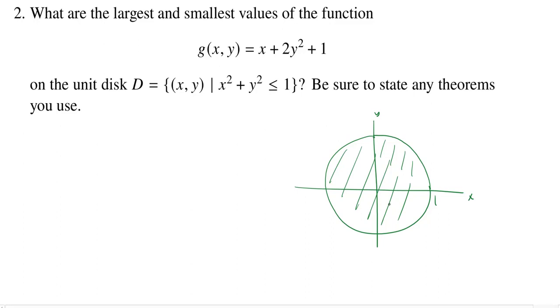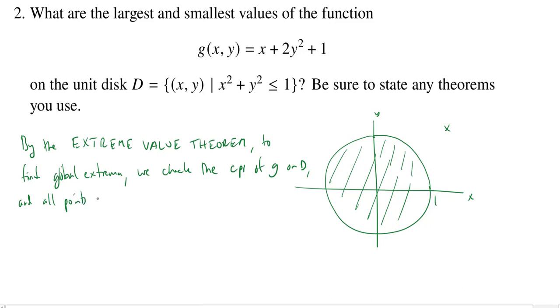Now, in order to find global extrema, we want to use the extreme value theorem since we're working in a closed bounded region. So by the extreme value theorem, to find global extrema, we check the critical points of g on the disk. That's step one. And we don't care about anything which is off the disk. We only care about the max values and min values on the disk.